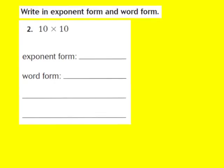Let's take a look at question number 2. Our job is to write this in exponent form and word form. They give us the problem 10 times 10. My first job is to write this in exponent form. I need a base and an exponent. My base is the number that is used as the repeated factor, so my repeated factor is 10. My exponent tells how many times the base is used as a factor, and 10 appears two times — once and twice. So my exponent is going to be a 2. I have a base of 10 and an exponent of 2, which represents 10 times 10.